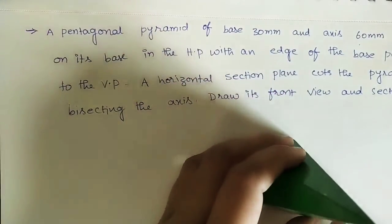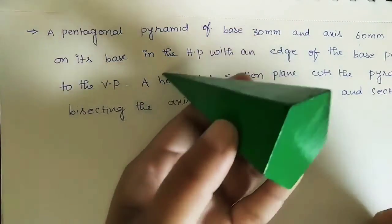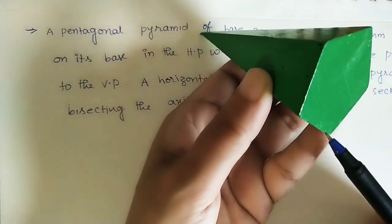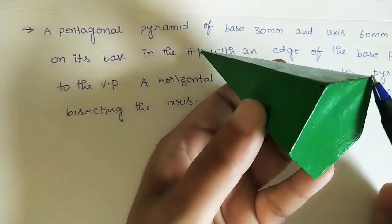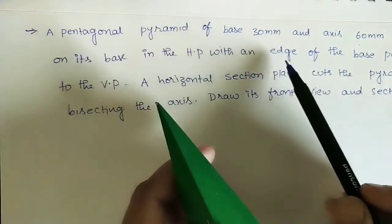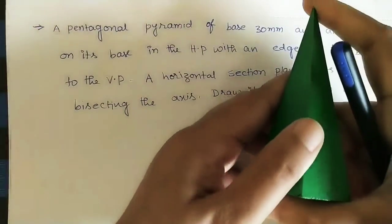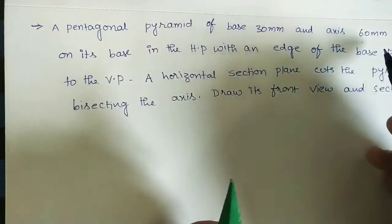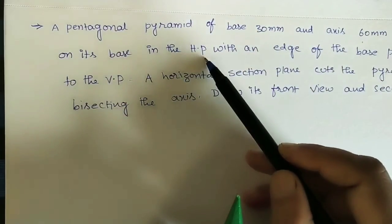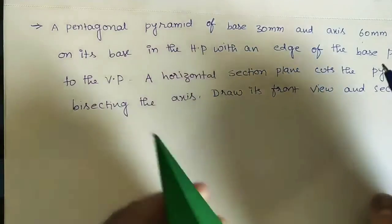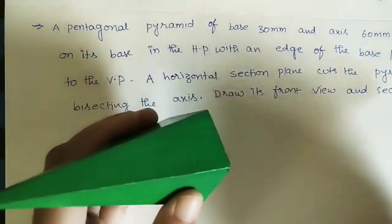The base side is 30mm — all sides have equal length of 30mm. The axis is 60mm, which means the height of the pyramid is 60mm. It is resting on its base in the HP (horizontal plane), so the base is on the horizontal plane.